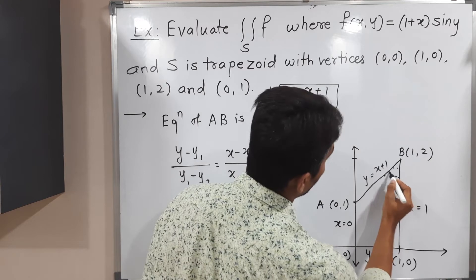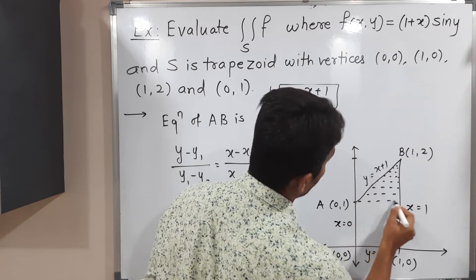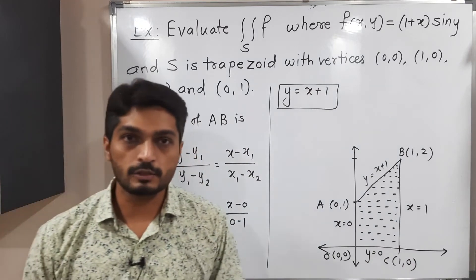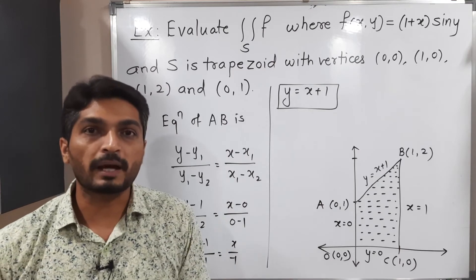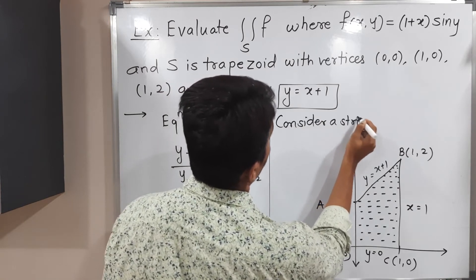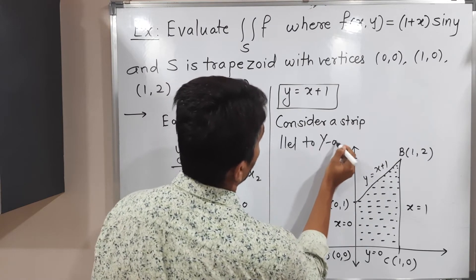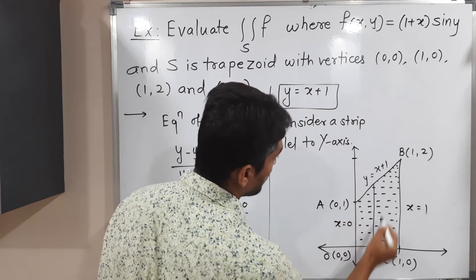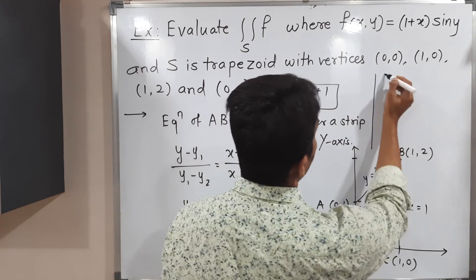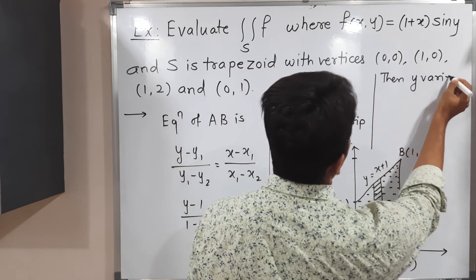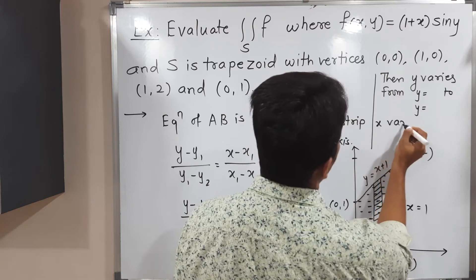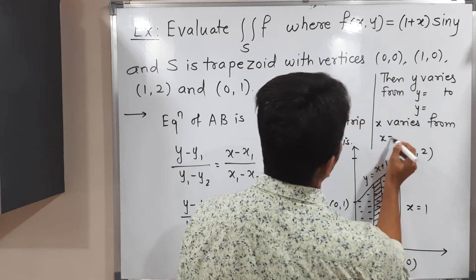This is the region of integration. When we have a region of integration, we consider a strip either parallel to the x-axis or y-axis. Here it is better to consider a strip parallel to the y-axis. Then y varies from a lower curve to an upper curve, and x varies from a left value to a right value.